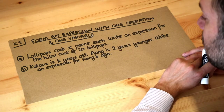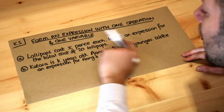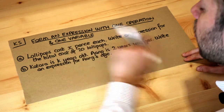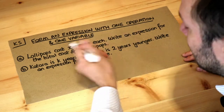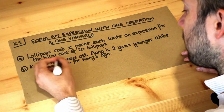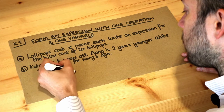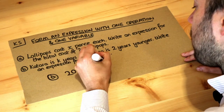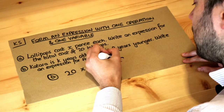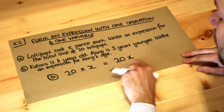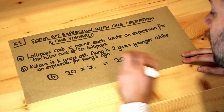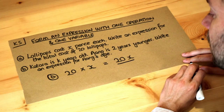It's no different in algebra. We have 20 lots of x pence, so we would do 20 times x. For part a, we've got 20 times x, or x times 20, which we can simplify to 20x. In algebra, if things are next to each other it means they're multiplied together. So the final answer is just 20x.